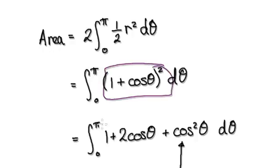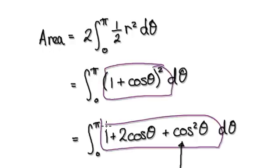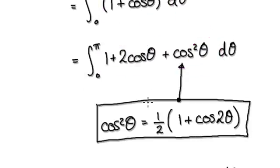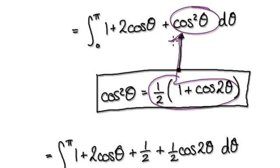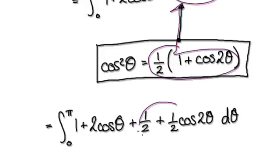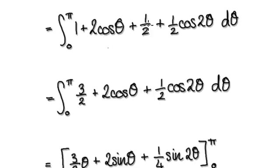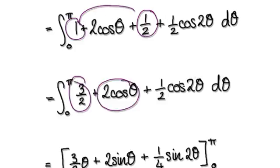Now multiply this out — that gives you this. This should be straightforward to integrate. To integrate cos squared, we use the double angle identity. Put this into here and it gives you this. Now everything is straightforward to integrate. Merge the constant terms together, and that gives you these three terms which are easy to integrate.